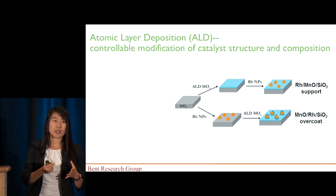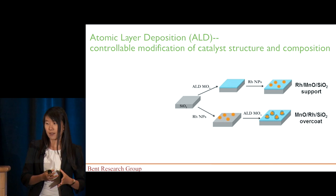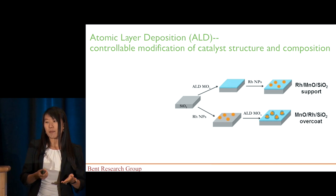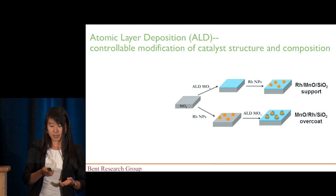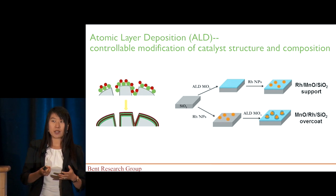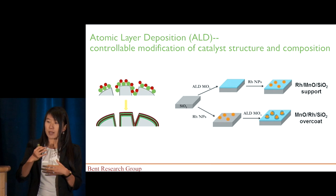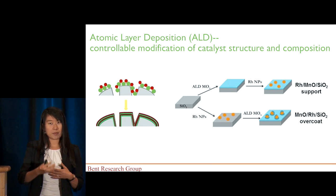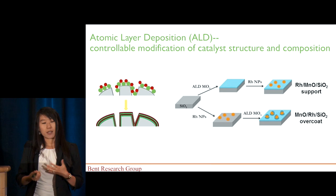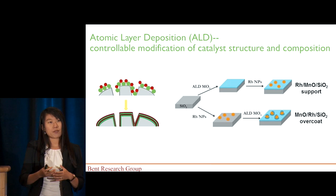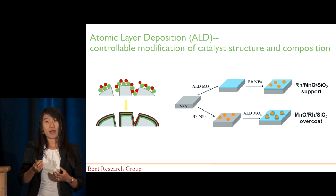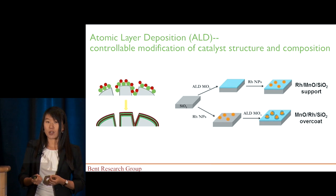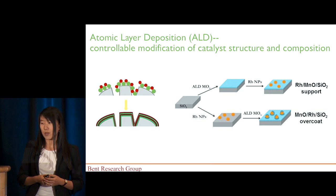Therefore, we want to directly create such interface layers and control the surface properties, and we do that by using atomic layer deposition. Atomic layer deposition is based on a self-saturating layer-by-layer growth model. It can achieve very uniform coating with angstrom-level control on high surface area substrates.